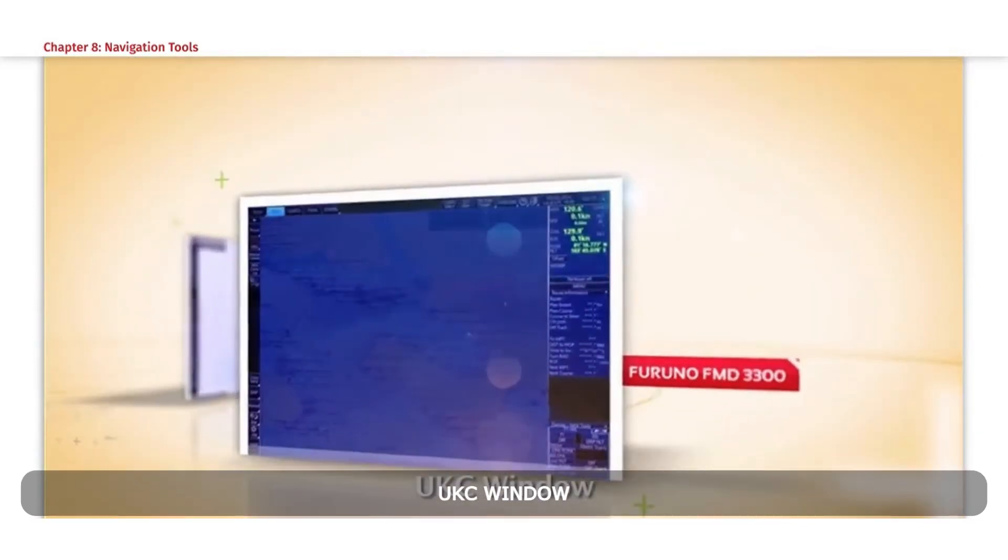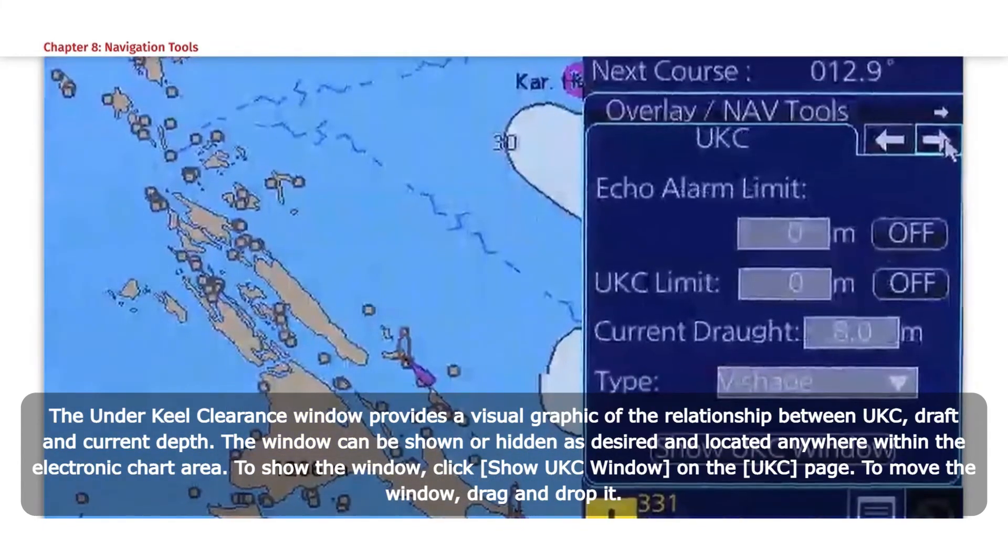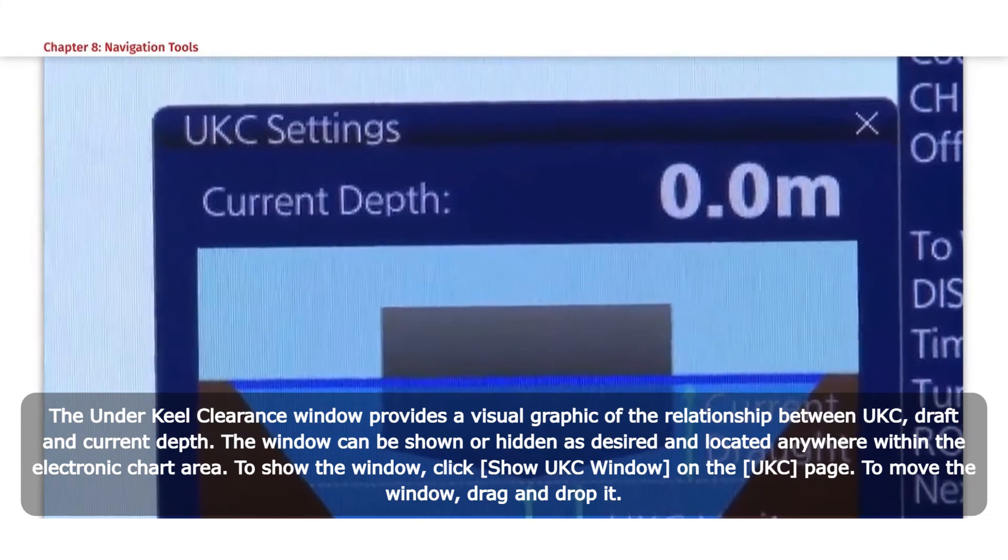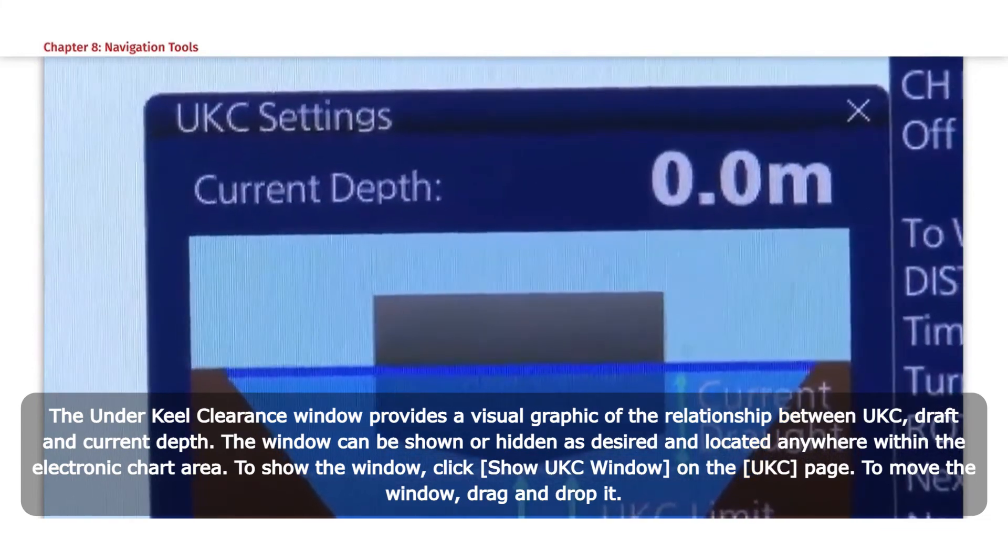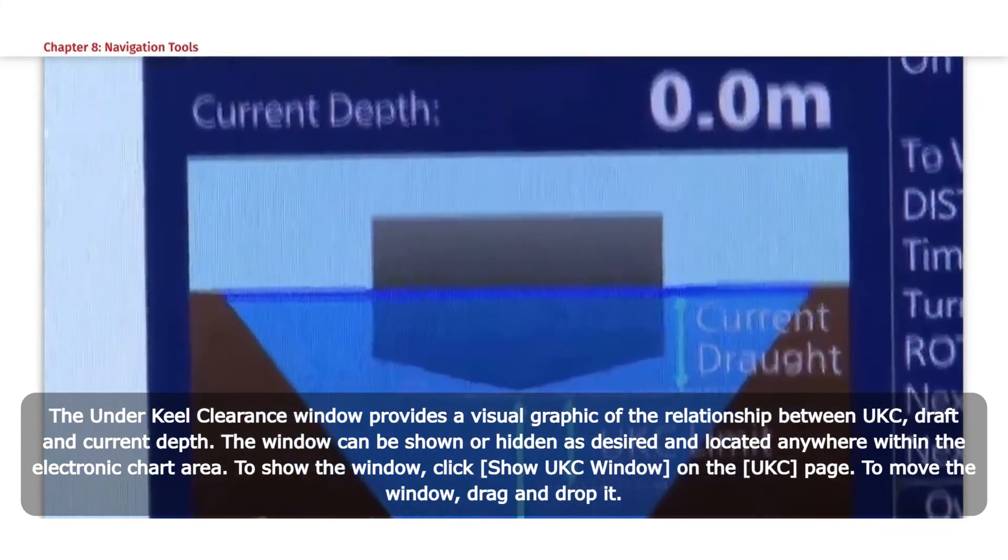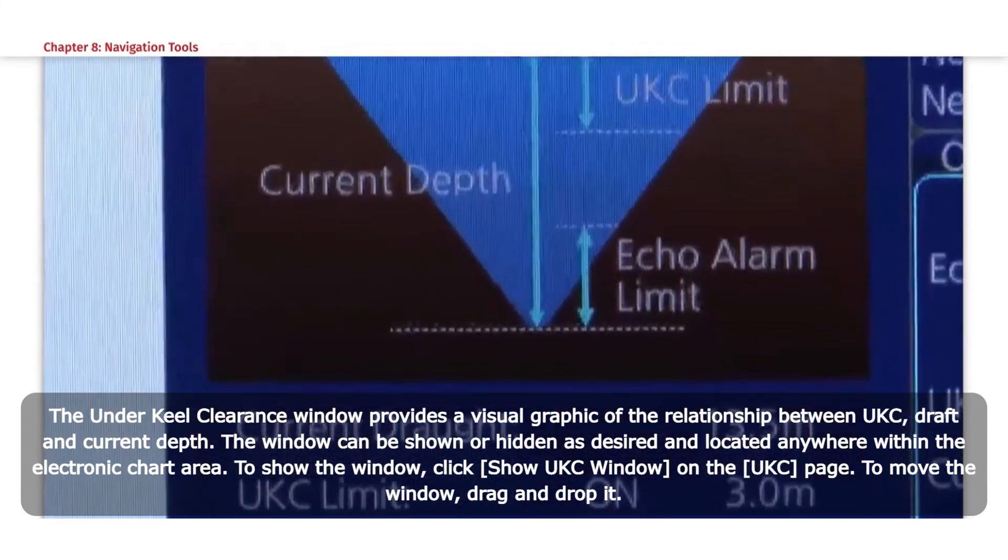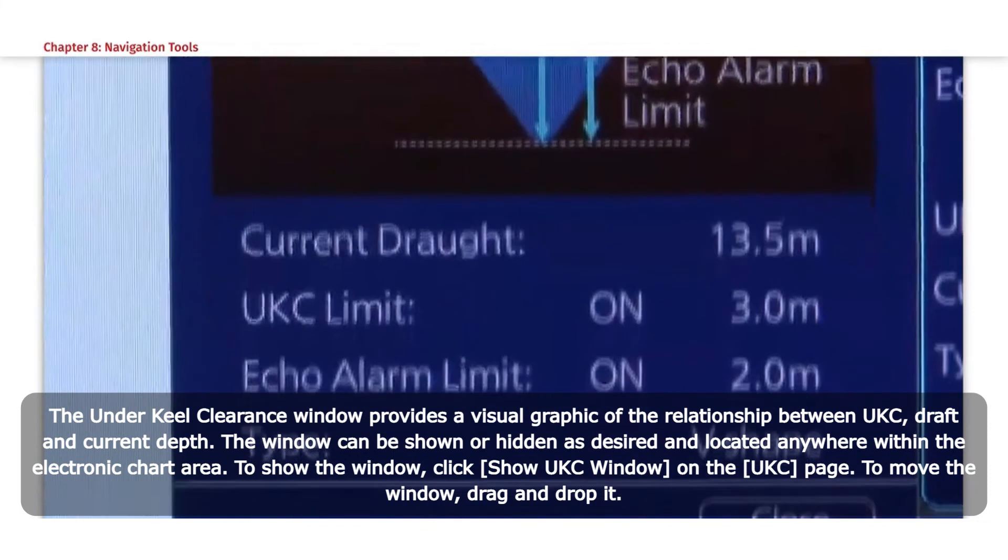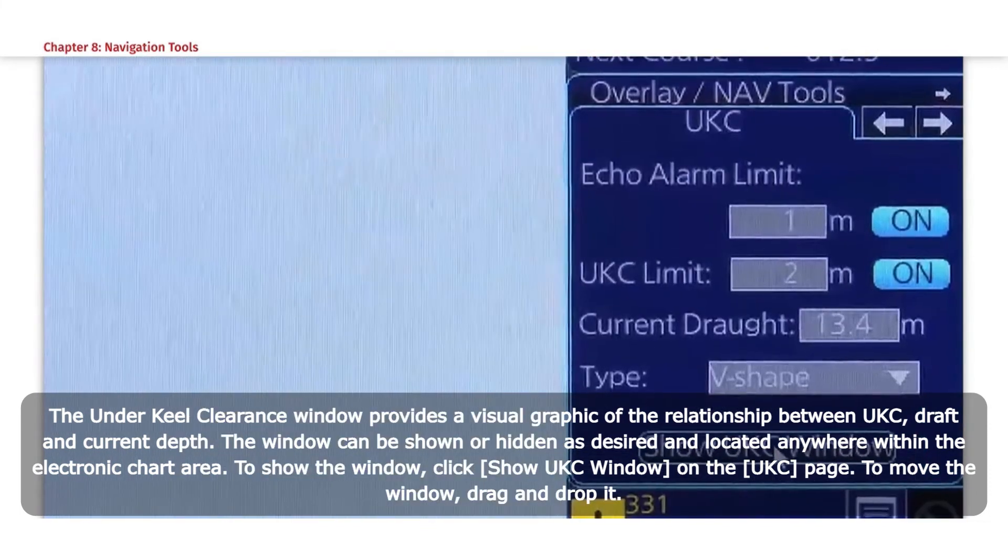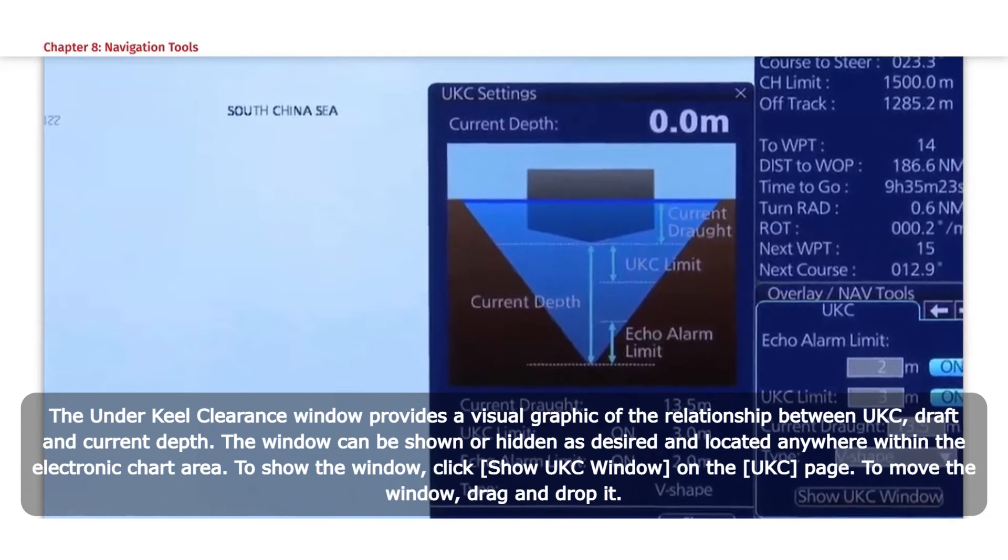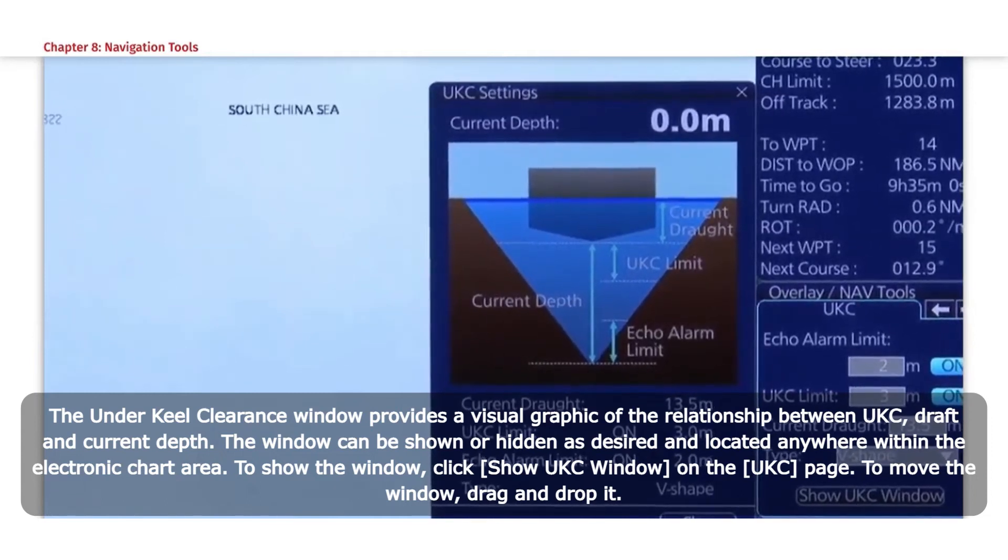UKC Window: The Underkeel Clearance window provides a visual graphic of the relationship between UKC, draft, and current depth. The window can be shown or hidden as desired and located anywhere within the electronic chart area. To show the window, click Show UKC Window on the UKC page. To move the window, drag and drop it.